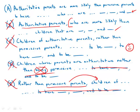A, on the other hand, has the verb right up front: 'Authoritative parents are.' It constructs the comparison correctly, it constructs the parallelism correctly, it is sleek, direct, and active. It is by far the best answer choice.